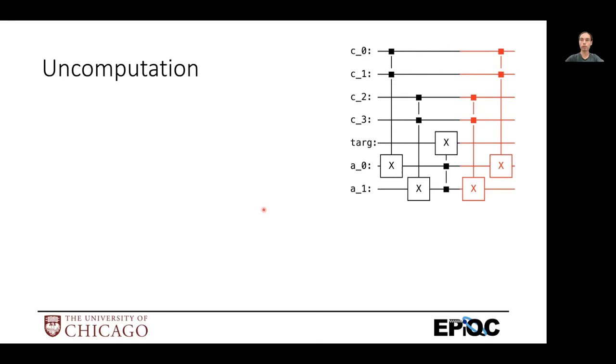So with uncomputation, if you noticed, I never talked about the right half of any of the example circuits. And that's because this right half is doing uncomputation.